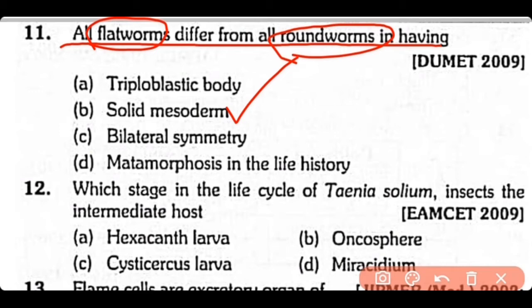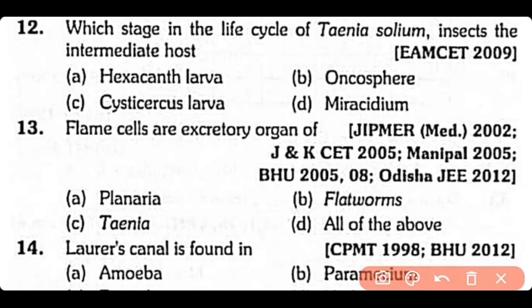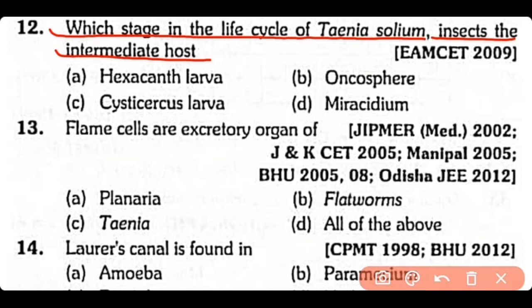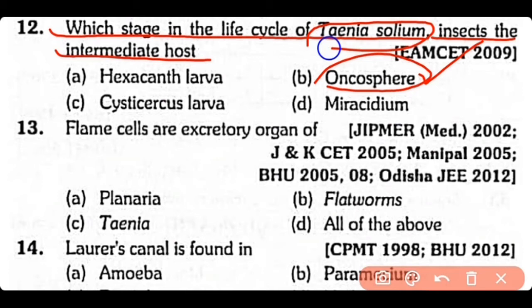Question no.12. Which stage in the life cycle of Taenia solium infects the intermediate host? Hexacanth larva, onchosphere larva, cysticercus larva, or miracidium? The correct answer is option B. The onchosphere larva in the life cycle of Taenia solium infects the intermediate host.